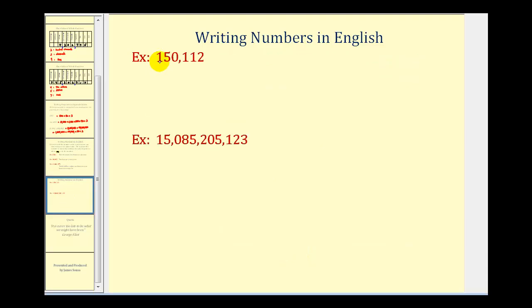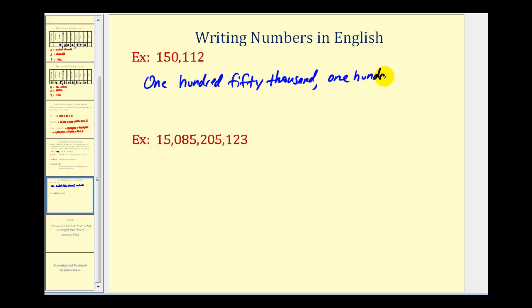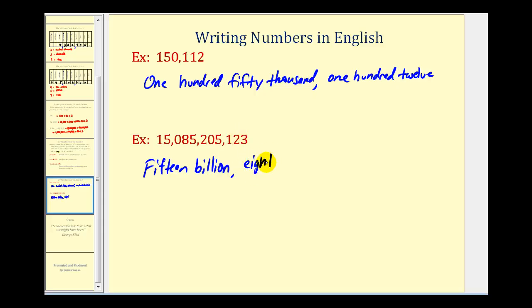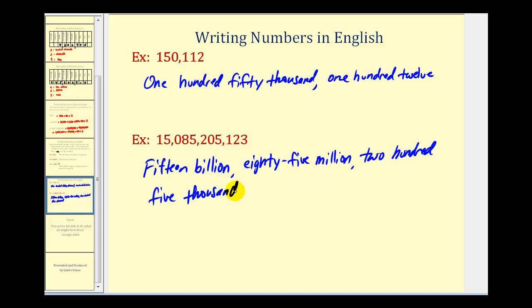Let's try a couple of our own. So we have one-hundred-fifty-thousand, one-hundred-twelve. Remember, we should not include the word 'and,' because 'and' represents a decimal point. In our last example, we have the thousands, millions, and billions — so we have fifteen billion, eighty-five million, two-hundred-five-thousand, one-hundred-twenty-three.